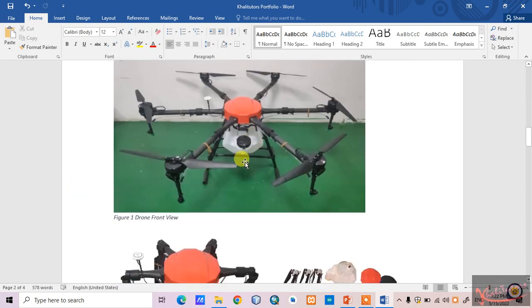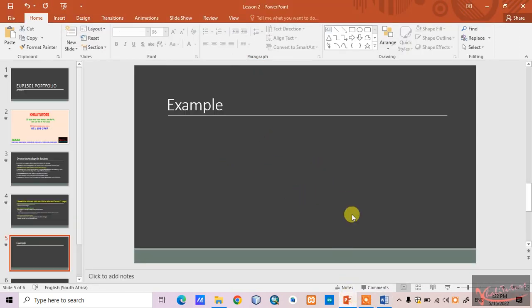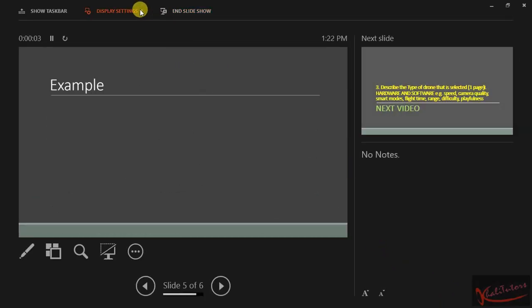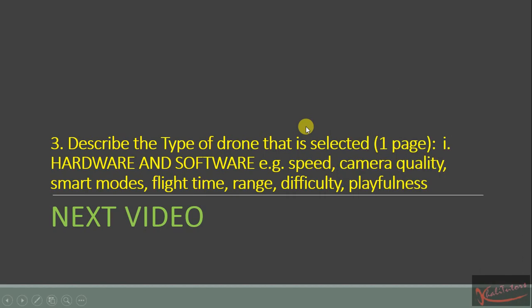I think that's it when it comes to this example, so we can continue with our slideshow. The next video will focus on number three — we need to describe the type of drone that is selected, look at the hardware and the software, and discuss the speed and all that. I'll upload the video as soon as possible. Thank you for watching.